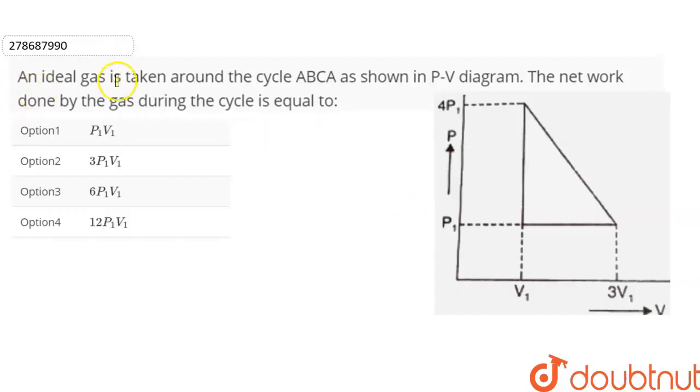Hi everyone, the question is an ideal gas is taken around the cycle ABCA as shown in the PV diagram. The net work done by the gas during the cycle is equal to.